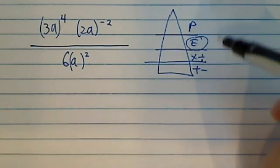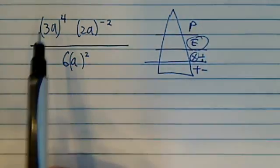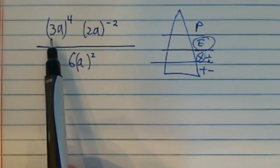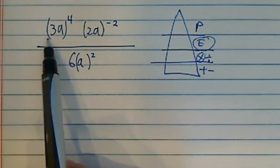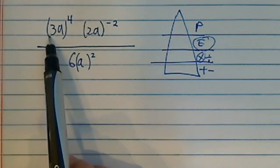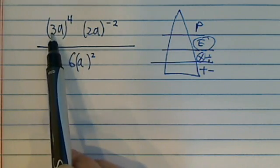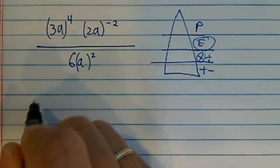Please excuse my dear Aunt Sally. So as you can see, exponential supersedes multiplication, so it's a good thing that you specifically put a parenthesis outside to say that this 4 is for both of the 3 a's. So let's get started.